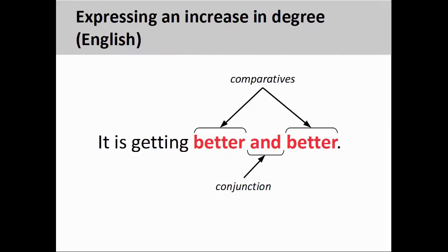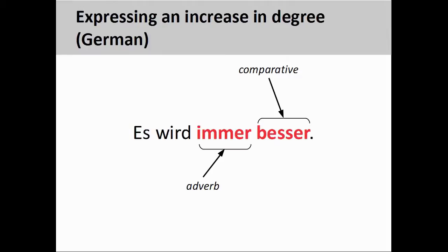When expressing an increase in degree over time, English sometimes uses two identical comparatives in parallel joined by the conjunction 'and' — for example, 'it is getting better and better', which could express gradual improvement in your understanding of German grammar over time. German relies on a different syntax: German uses only one comparative adjective or adverb preceded by the adverb 'immer'. For example, 'es wird immer besser' — meaning 'my German is improving' — is a translation of the English construction.